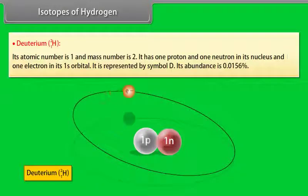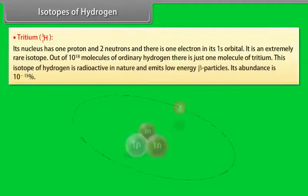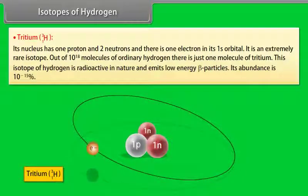Tritium. Its nucleus has one proton and two neutrons and there is one electron in its 1s orbital. It is an extremely rare isotope. Out of 10 to the power 18 molecules of ordinary hydrogen, there is just one molecule of tritium. This isotope of hydrogen is radioactive in nature and emits low-energy beta particles. Its abundance is 10 raised to the power minus 15%.